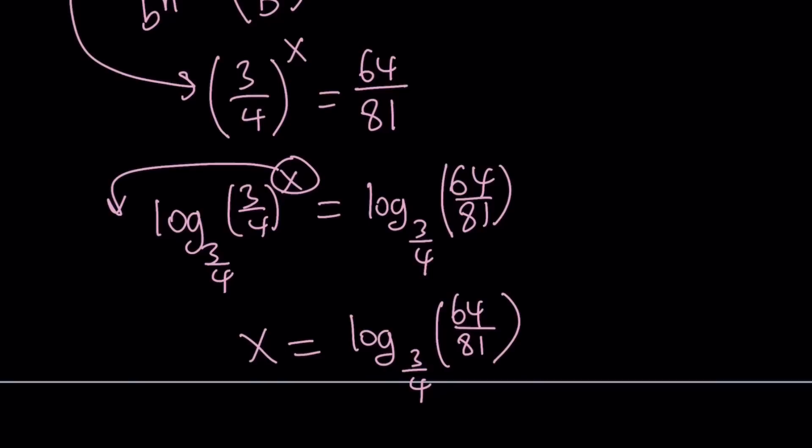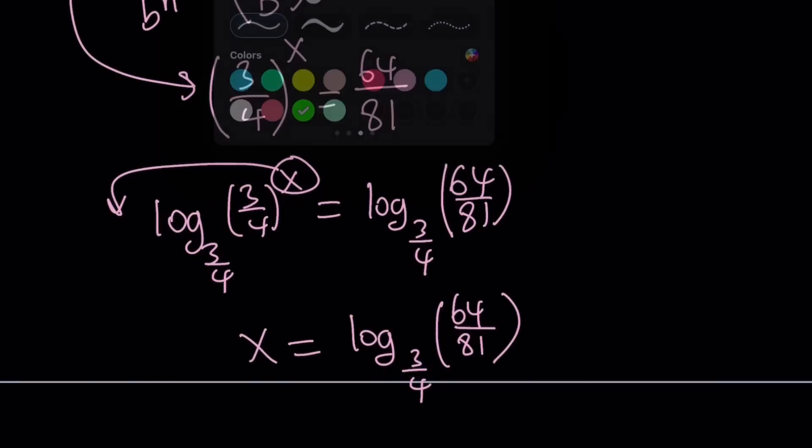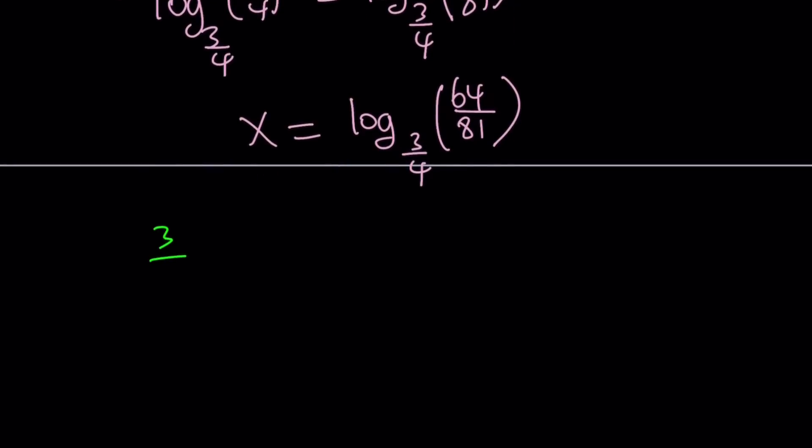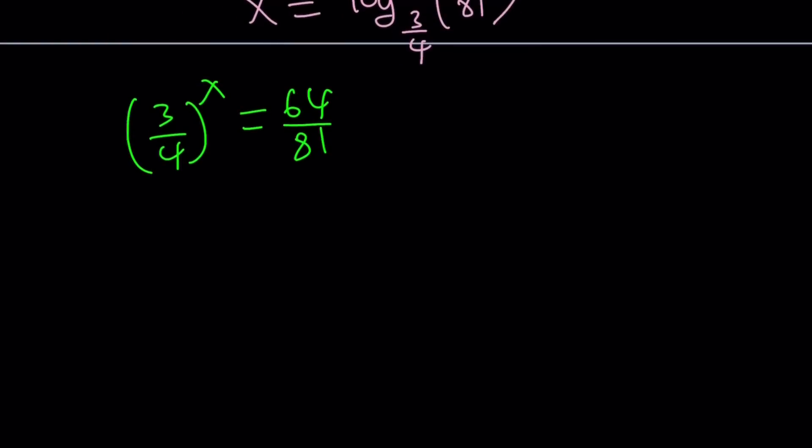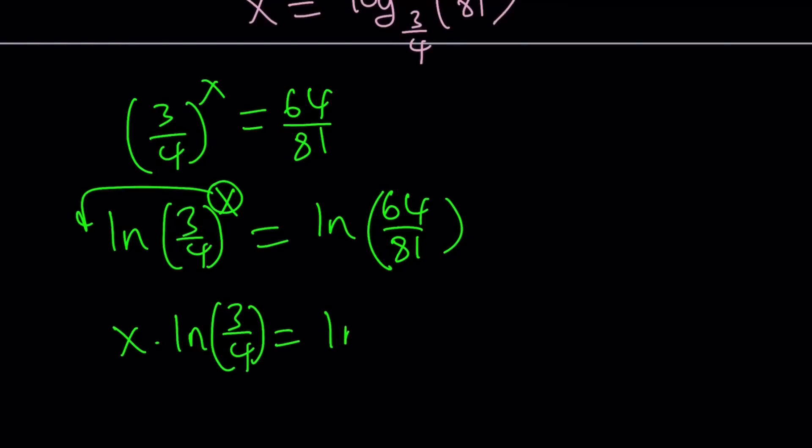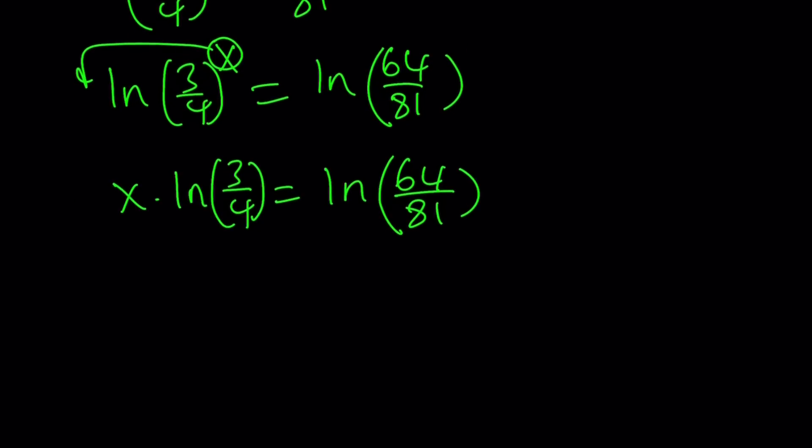Let's go ahead and do this with the ln, the natural log, and then we're going to compare our answers to the first method. Picking up from here, 3 fourths to the power x equals 64 over 81. I'm going to ln both sides. When you take the natural log on both sides, then the x, you're going to bring it down again. But this time, this is not going to be 1. It's just going to be a natural log of some number. So it's going to be like x times ln 3 fourths equals ln 64 over 81. We can divide both sides by the natural log of 3 fourths. That's going to give us the answer in another form.